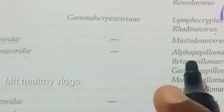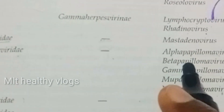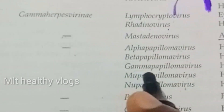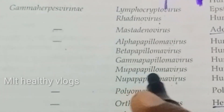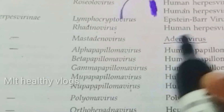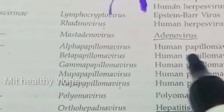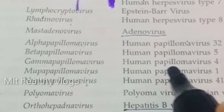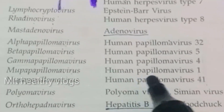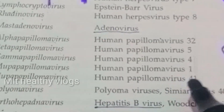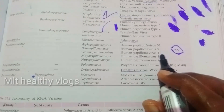Papillomaviridae: there is no subfamily. The genera are Alphapapillomavirus, Betapapillomavirus, Gammapapillomavirus, Mupapillomavirus, and Nupapillomavirus. The species include: Human Papillomavirus 32, Human Papillomavirus 5, Human Papillomavirus 4, Human Papillomavirus 1, and Human Papillomavirus 41.